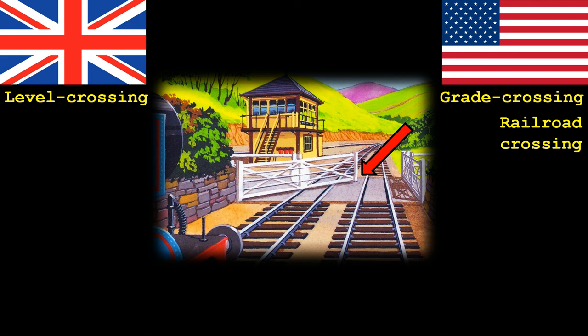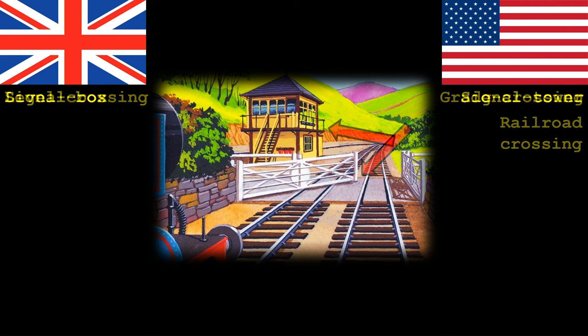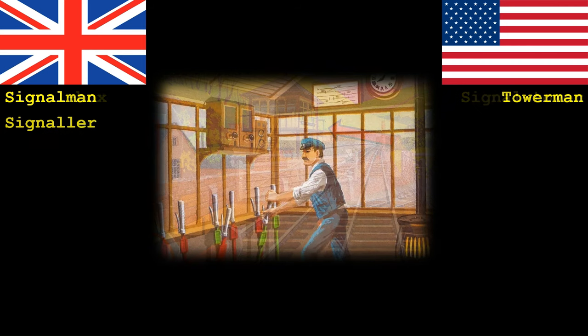Some crossings these days are automatic. Others however are controlled by tall boxy looking buildings found beside the line, which are also used for controlling signals. In the UK the boxy shape has earned it the name signal box, whilst in America its height above the line has earned it the name signal tower. Inside these buildings you will find an operator. In the UK this position was known as a signal man, but on the main rail network they have progressed to the more modern term signaller. In America meanwhile they refer to this as a tower man.